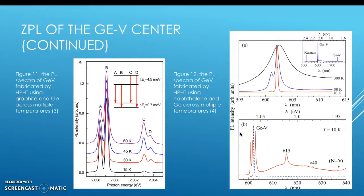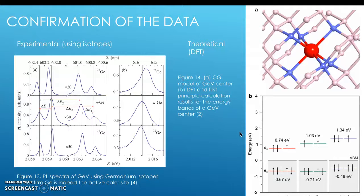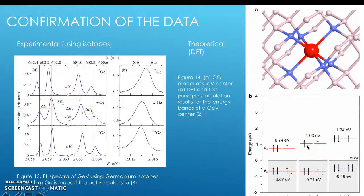The high pressure, high temperature conversion methods for both graphite and naphthalene into diamond show thermal broadening in their spectra. Confirmation that germanium is indeed the active impurity in the site was done experimentally by Akamov, who used germanium isotopes to obtain shifts in the peak, confirming that the peak is attributed to germanium. Iwasaki also uses DFT and first-principles calculations to find both the split vacancy structure and the bandgap of the vacancy, showing that neutral GeV and negatively charged GeV have similar bandgap energies.